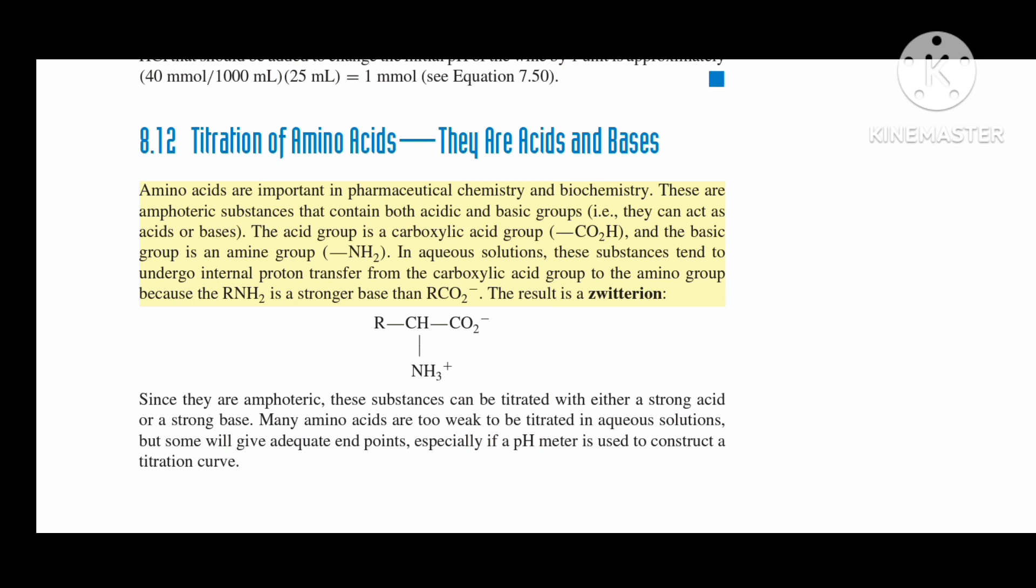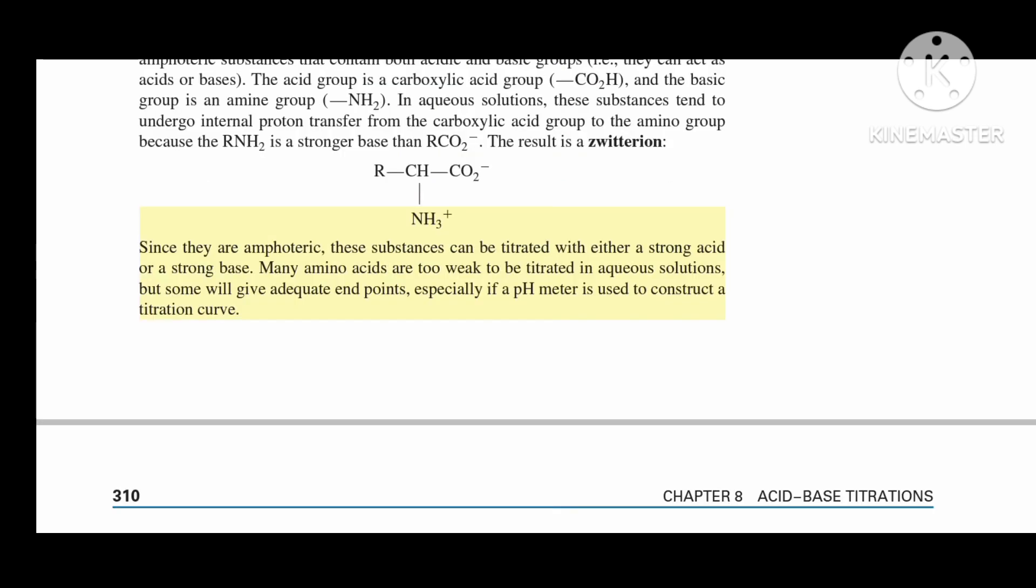The result is a zwitterion: R-CH-CO2- NH3+. Since they are amphoteric, these substances can be titrated with either a strong acid or a strong base. Many amino acids are too weak to be titrated in aqueous solutions, but some will give adequate endpoints, especially if a pH meter is used to construct a titration curve.